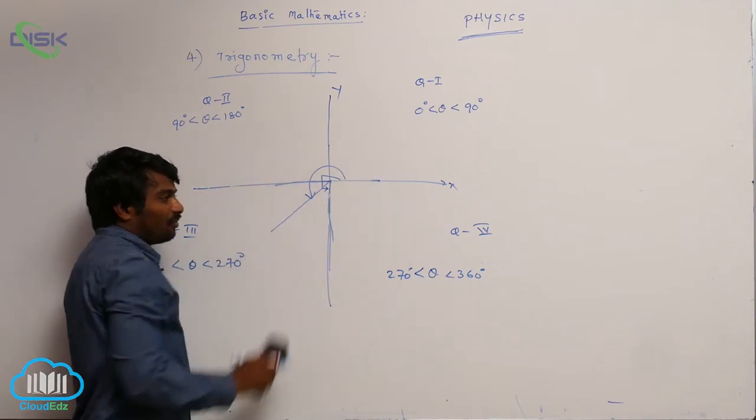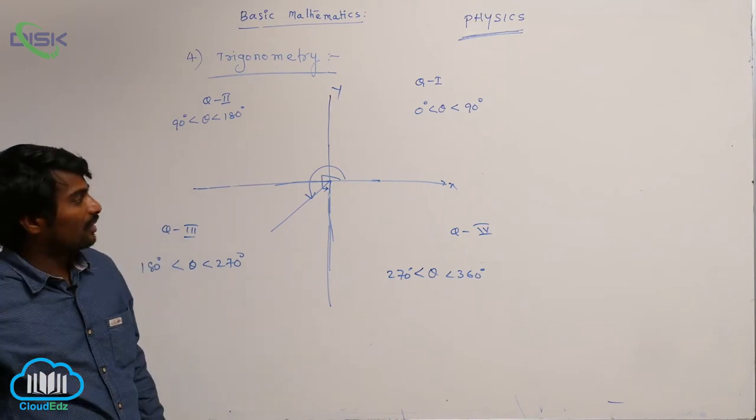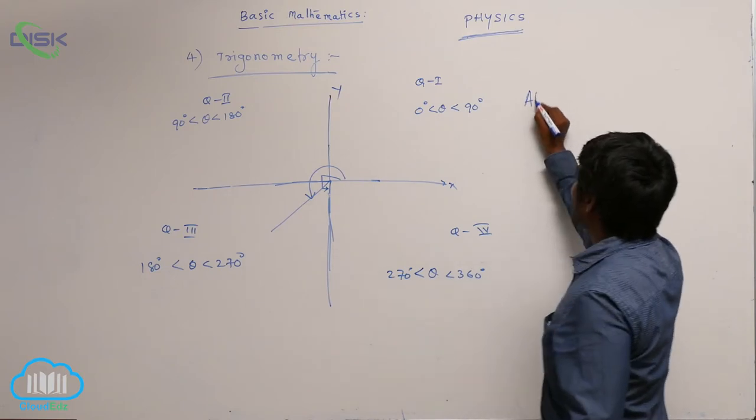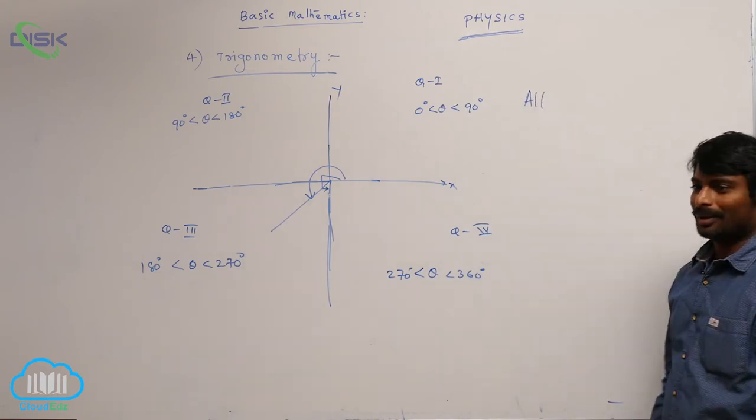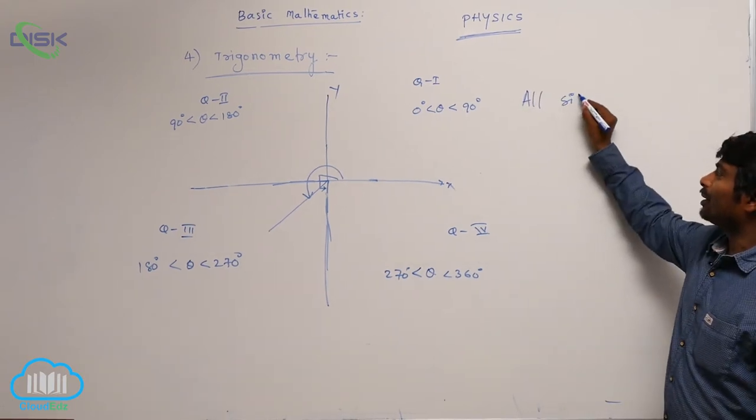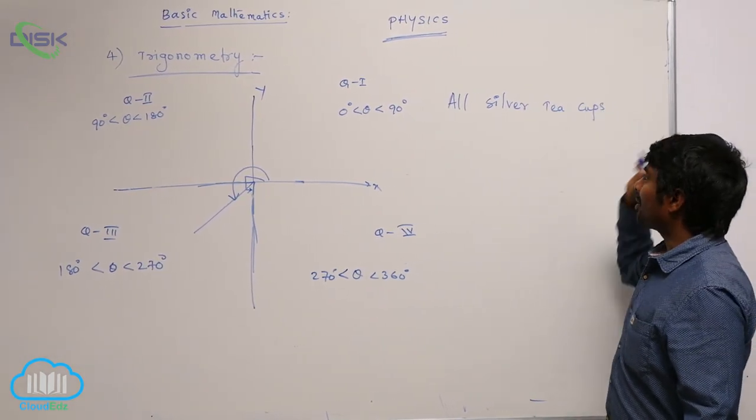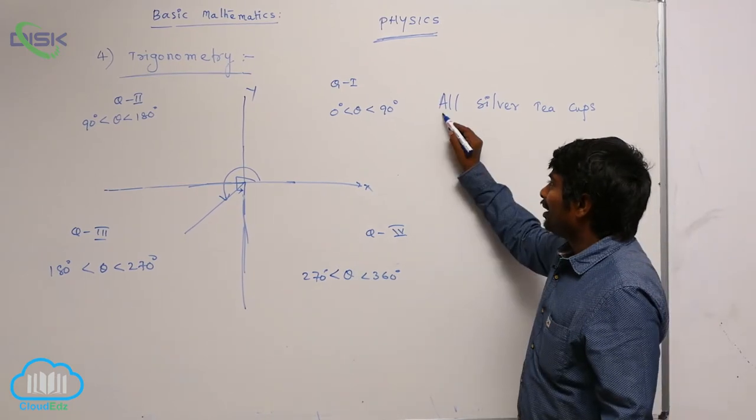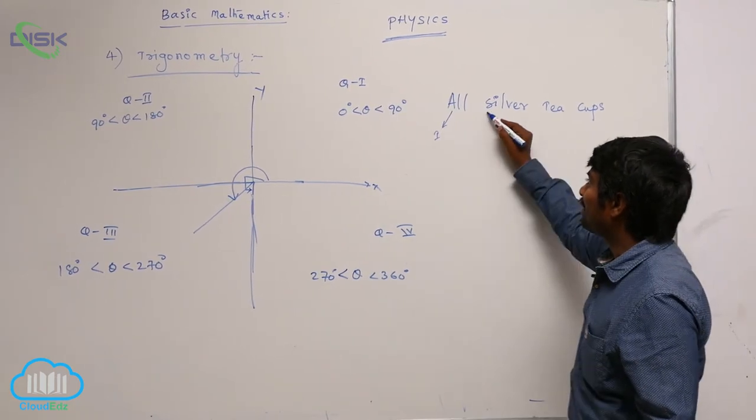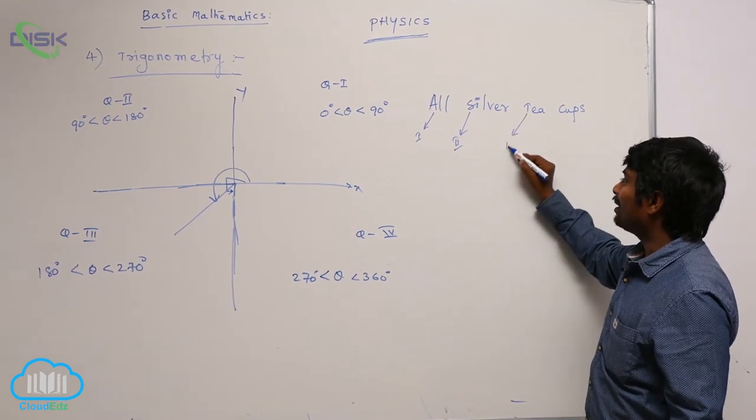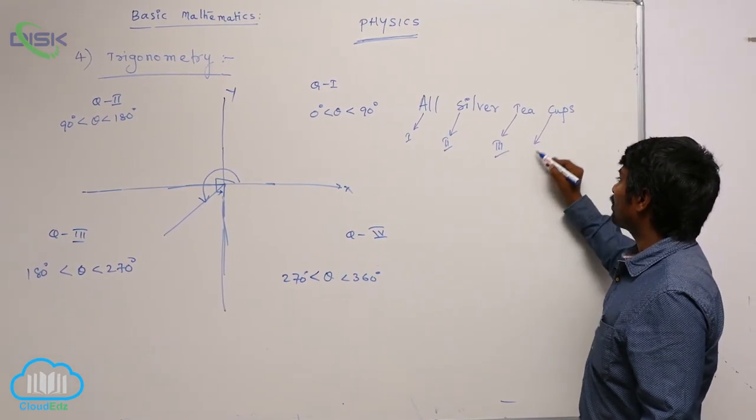For the sign of these trigonometric ratios, we have a mnemonic based on this: All Silver Tea Cups. In first quadrant, in second quadrant, third quadrant, fourth quadrant.